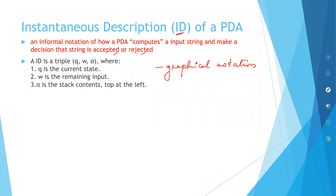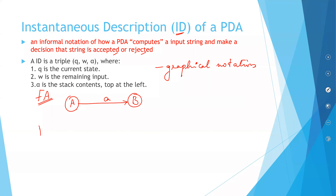Before we go into PDA, let's just revise our finite automata. You will have a state called A, another state called B, and on a particular input you will change from state A into state B. This is how you do the graphical notation of a finite automata.